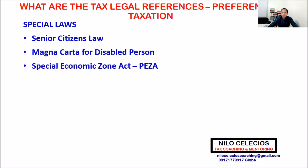After the income tax holiday, you can apply for an extension. There are also extensions if you have additional investment — dollar investment — or you will use raw materials here in the Philippines, or you will increase your employees. After the income tax holiday, the PEZA company is subject to 5% gross income tax: sales minus the cost of goods manufactured and sold. Multiplied by 5%, that's the income tax of the PEZA company after the income tax holiday.